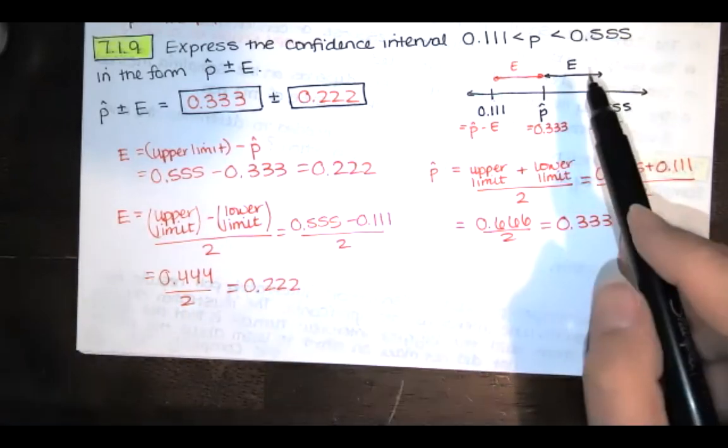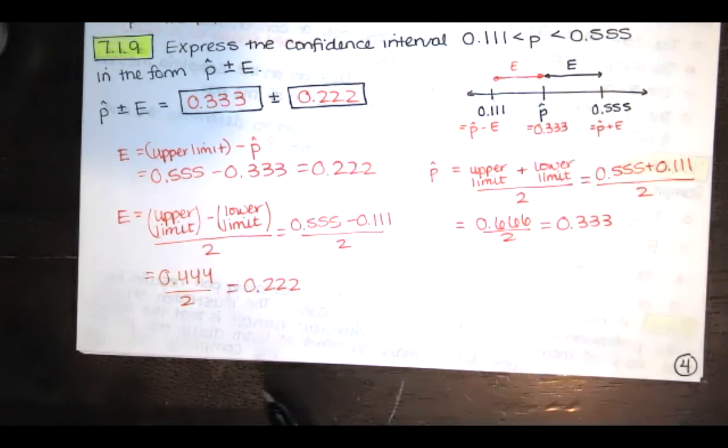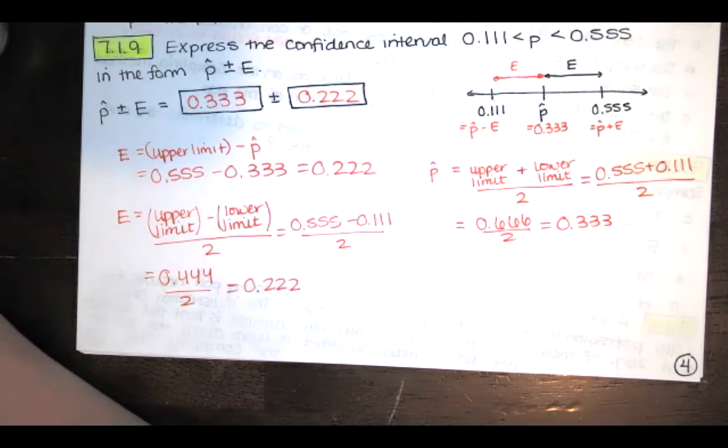It's the same value that we get when we just take this and we subtract p hat and we get 0.222 there as well. So that's it. Pretty simple.